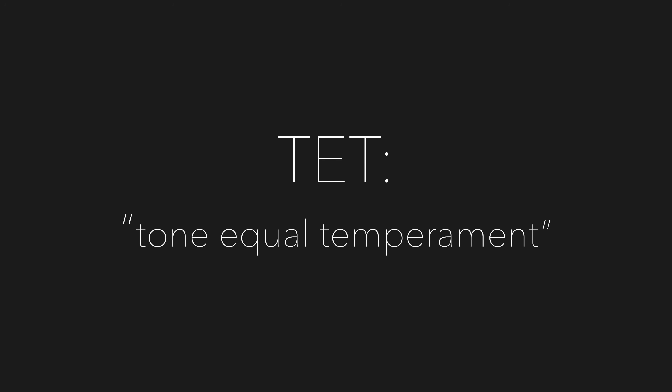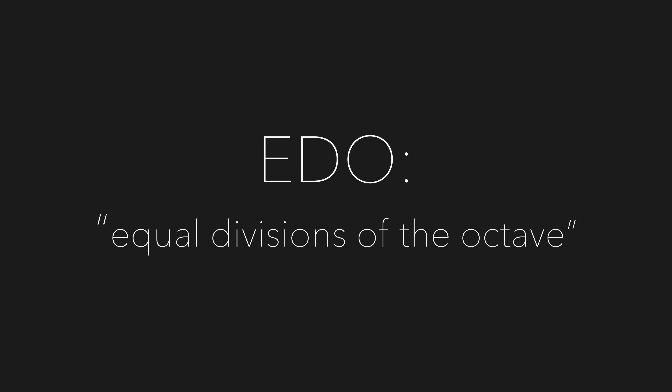This term is practically synonymous with TET, or T-E-T, as in 12 TET or 12 Tone Equal Temperament. Although on a technical level there is a subtle distinction: TET implies an intention that a given tuning system has tempered out a specific comma, whereas the term EDO does not make this assumption or implied judgment.